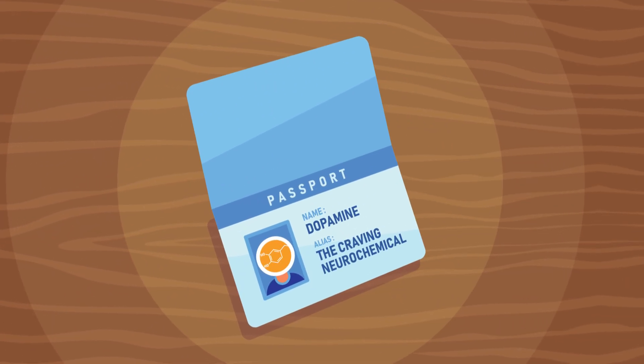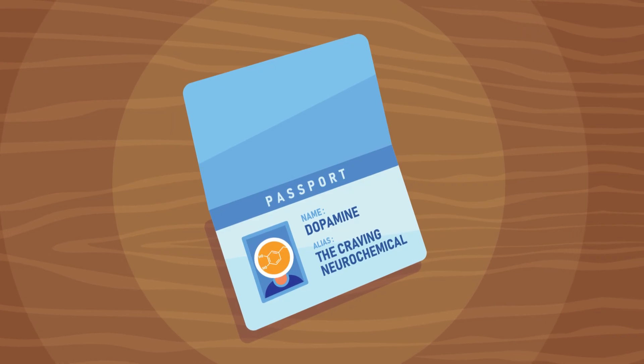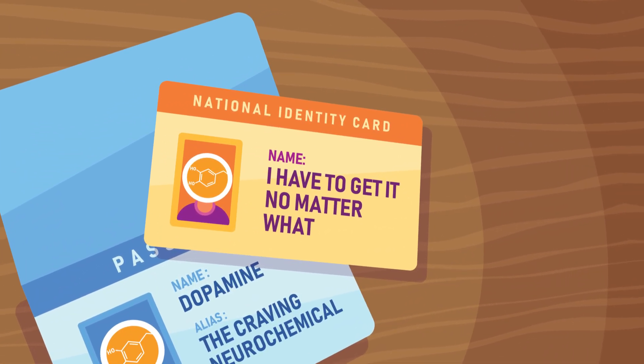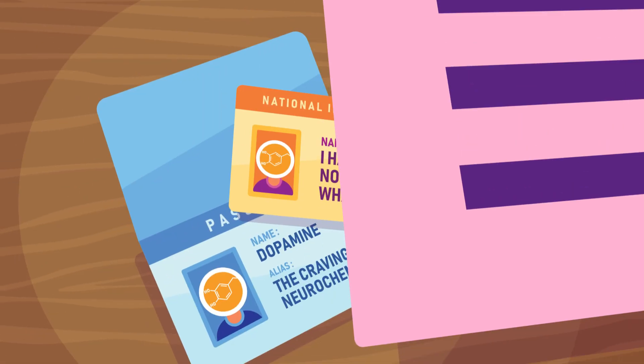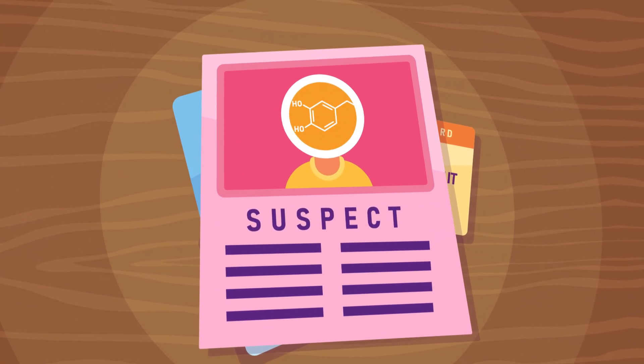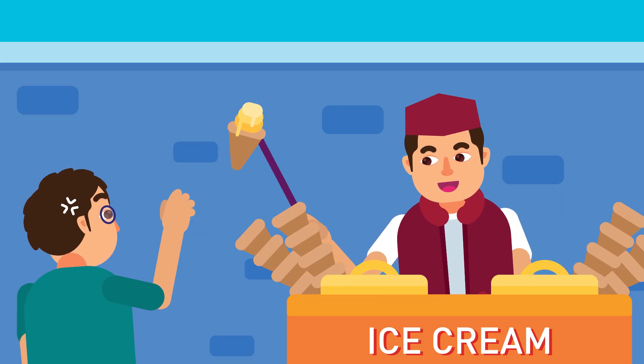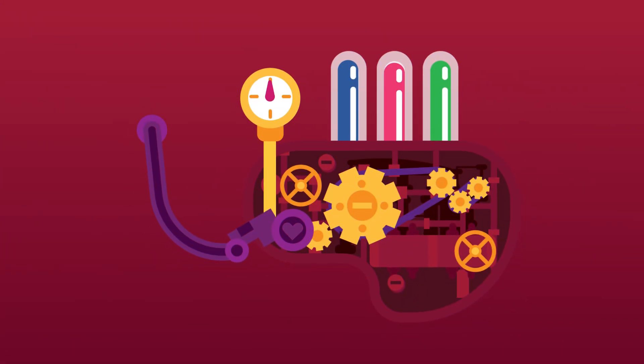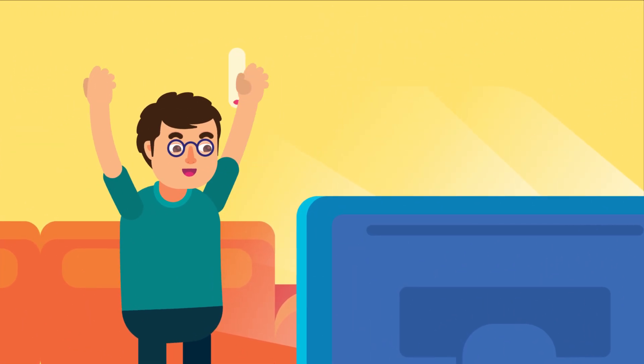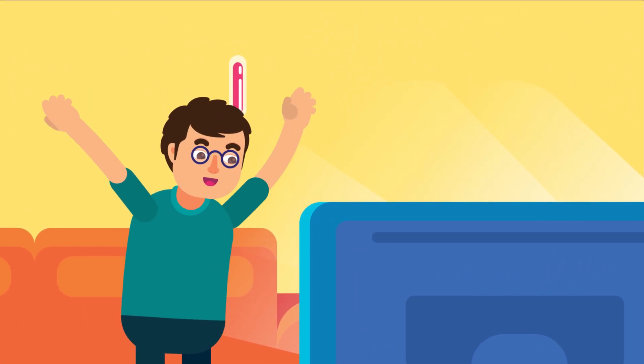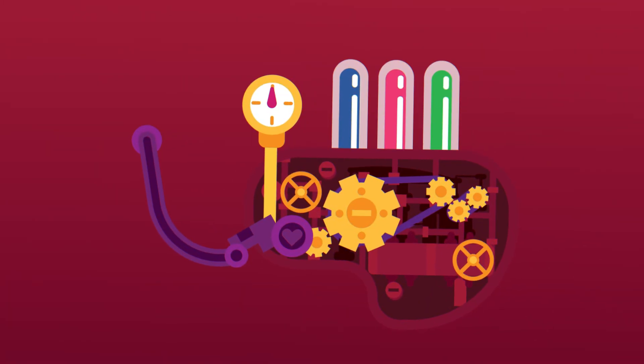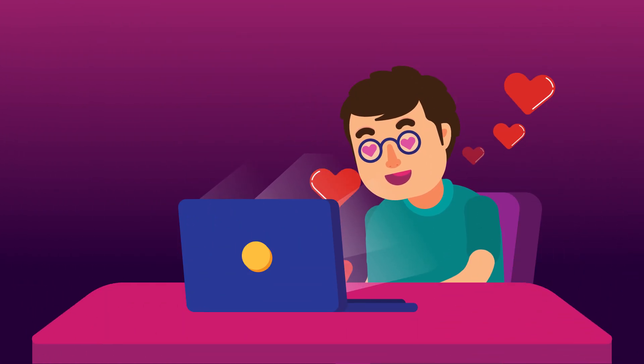Dopamine has lots of nicknames: the craving neurochemical, the I got to have it no matter what neurochemical. It's behind all motivation to do anything. You're not craving ice cream or sex with a porn star, you're actually craving more stimulation of your reward circuitry. You don't want to win the lotto, you want to activate your reward circuitry. The bigger the surge of dopamine in response to something, the more you want it.